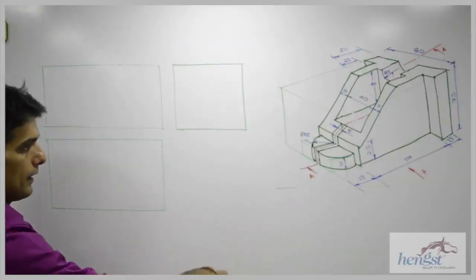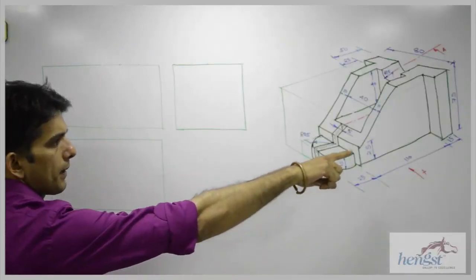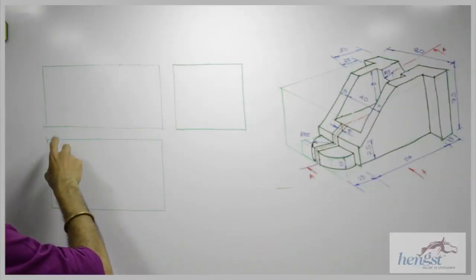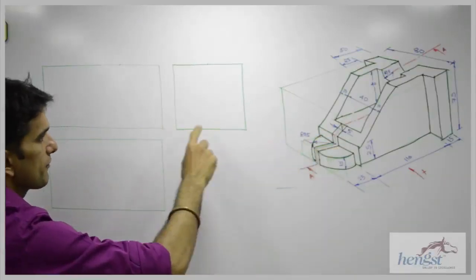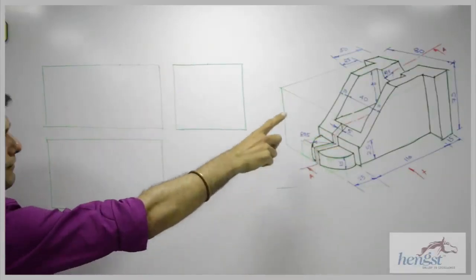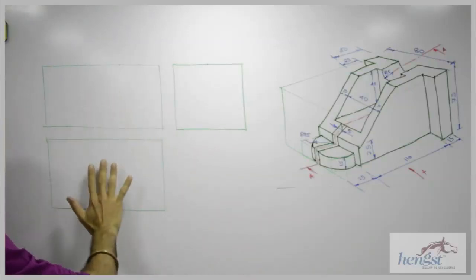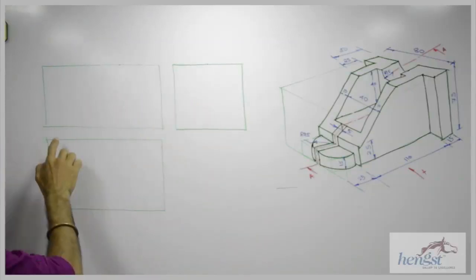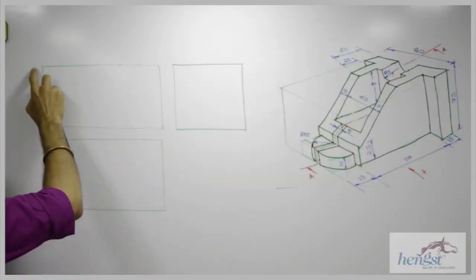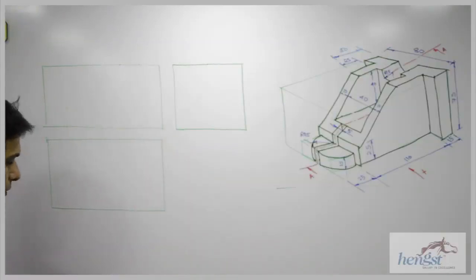The length is 25 plus 110 plus 15, which gives 150. Height is given as 75, and width is 80. First we will draw the layout — front view, top view, and side view in first angle projection. We will draw this layout with dimensions 150, 75, and 80. After drawing this layout, we will start with the front view.